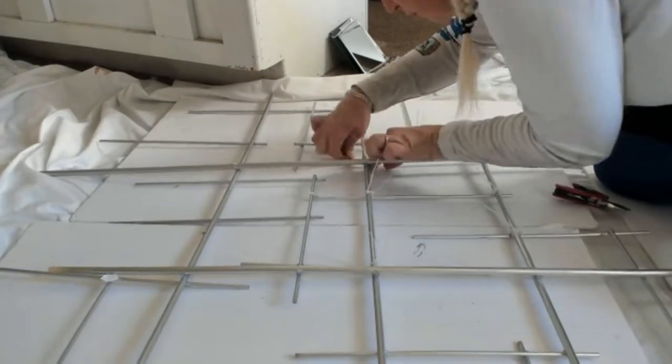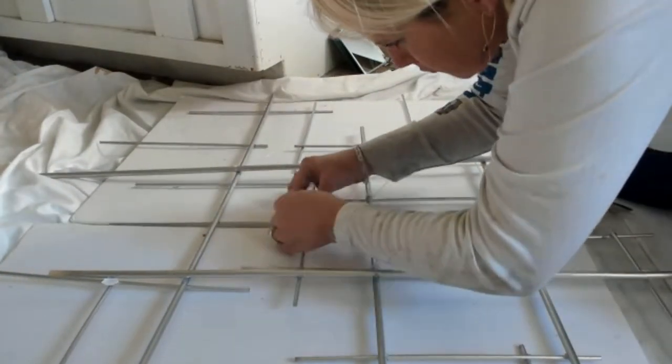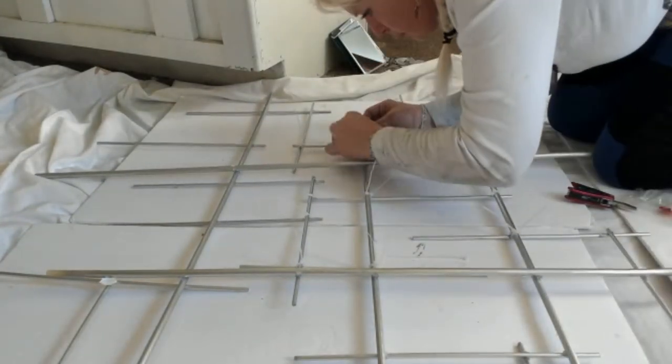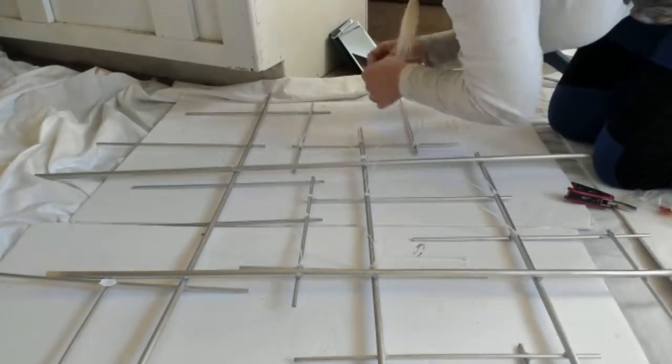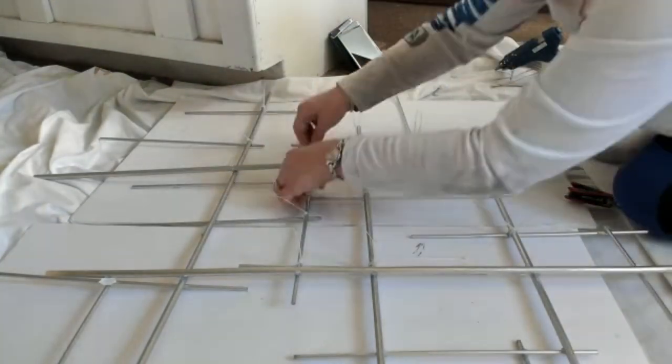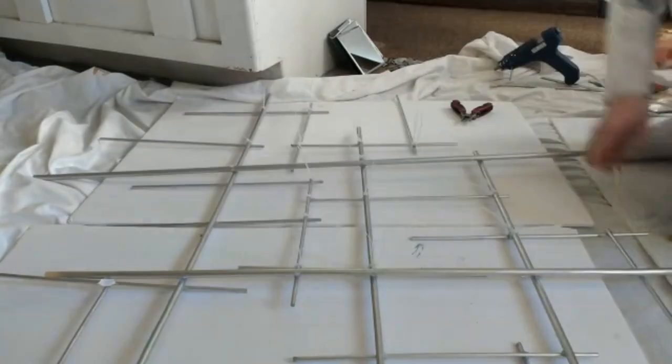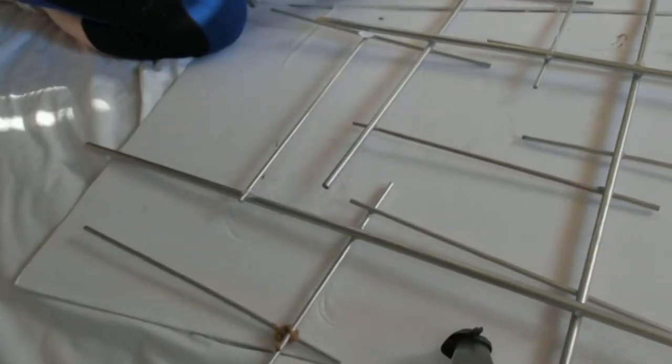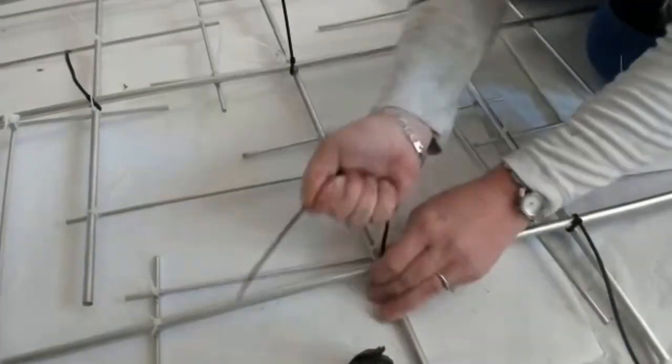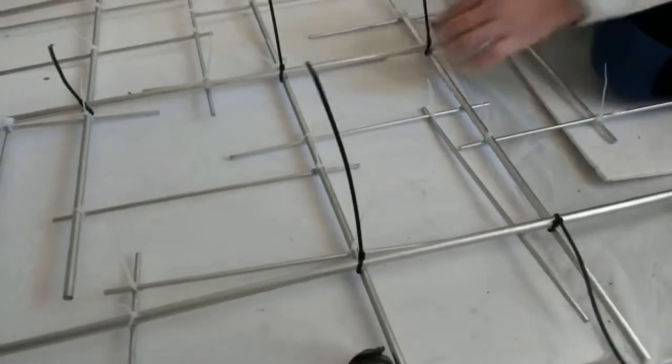This was the only part that was actually really time consuming and it still only took about 15 or 20 minutes or so. After I've gotten the little zip ties on there, I went to my husband's toolbox to find some heavier duty zip ties. I'm going to go through with these black zip ties and get the bigger dowels and just kind of tighten it and really secure it.